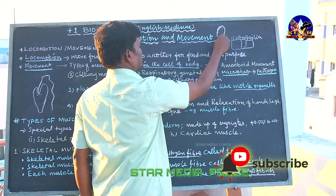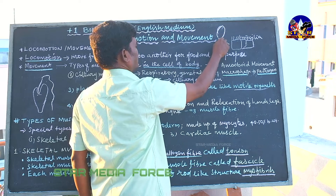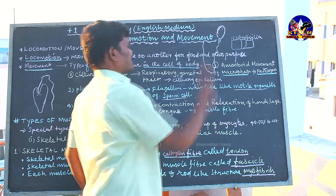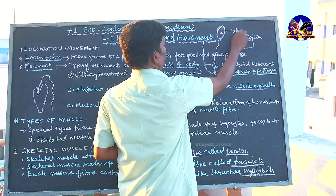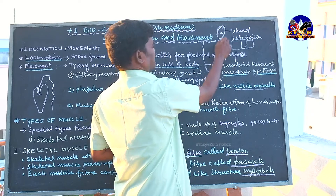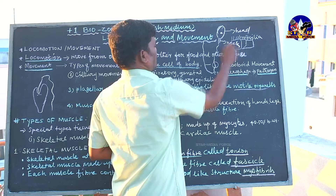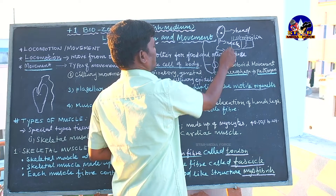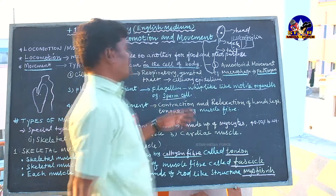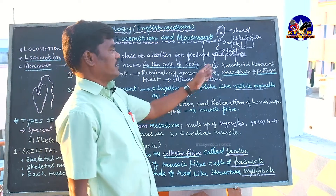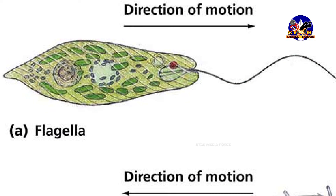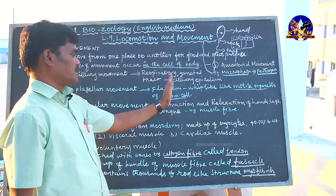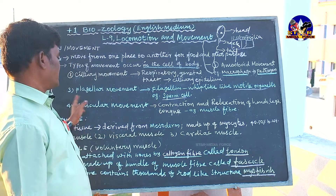A key example is the sperm cell. The sperm cell has a head with a triangular shape, a neck, and a long tail. With the help of the tail, it swims easily to reach the ovum. The sperm cell moves from one place to another by flagellar movement.